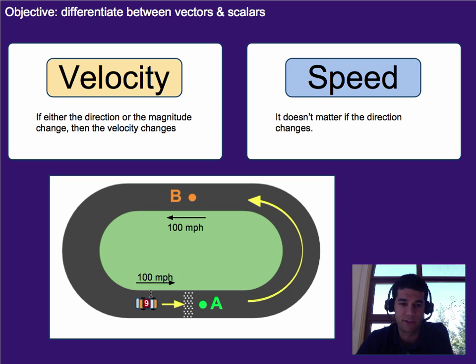Speed, however, stays the same. It could go around the track a million times and it would be the same speed the entire time, assuming it was always 100 miles per hour. If the car dropped to 99, then it would be a new speed. It would also be a new velocity as well.